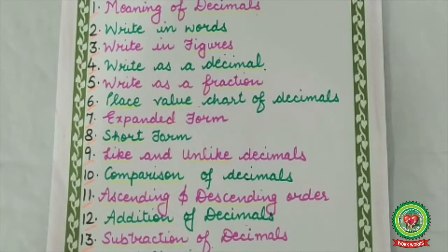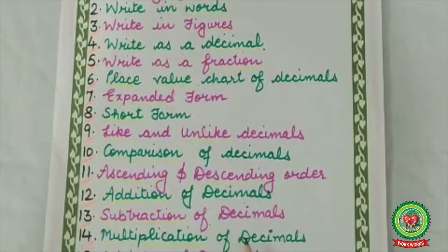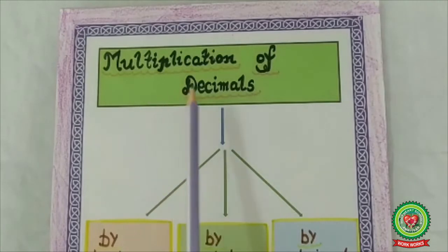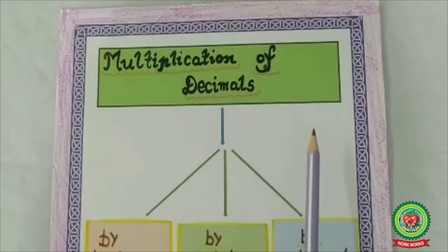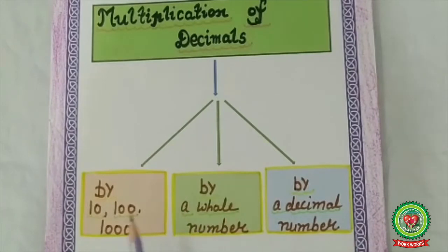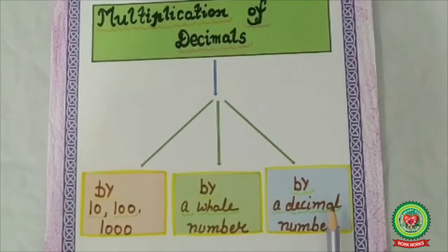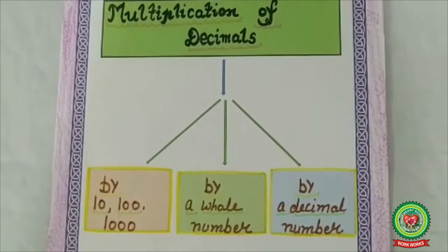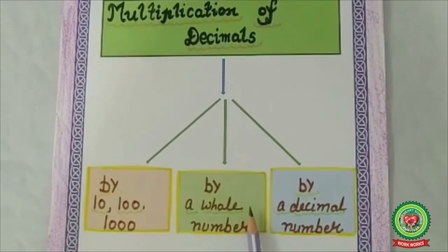By the end of this video, students, you will be able to learn multiplication of decimals. We have done multiplication of whole numbers, and today we will learn multiplication of decimals. Multiplication of decimals is done in three ways: multiplication of a decimal number by 10, 100, and 1000; multiplication of a decimal number by a whole number; and multiplication of a decimal number by a decimal number.